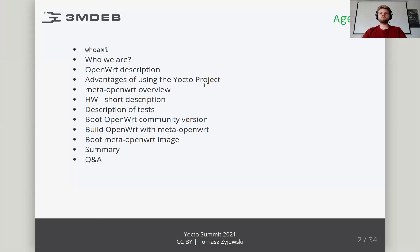First, I will introduce myself and the company I work in. Then we will briefly talk about what OpenWrt is and how it can be built. Next, I will mention the advantages of using the Yocto project over the OpenWrt build system. In the next section, I will try to thoroughly discuss the Meta OpenWrt layer, which is the main topic of this presentation. The entire presentation will be crowned with attempts to run the OpenWrt system on Raspberry Pi 4, both using the ready-made system provided by the OpenWrt community and an image built with the use of Meta OpenWrt.